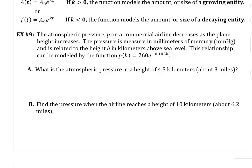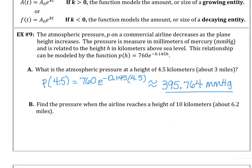So on part a, we want to know the atmospheric pressure at a height of 4.5 kilometers, which is about 3 miles. So substituting 4.5 into that function with our calculator 760e^(-0.145 * 4.5) tells us that atmospheric pressure is 395.764 millimeters of mercury. And you notice I'm giving three numbers behind the decimal to follow the AP structure.